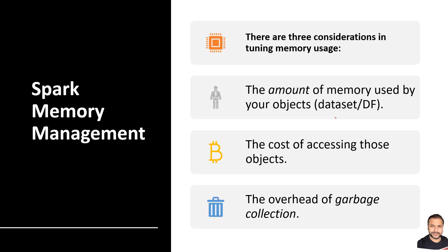There are three basic considerations when talking about memory management and tuning. First is the amount of memory used by your objects — this determines how much space would be grabbed on the JVM. If your JVM fills up very quickly it will trigger garbage collector cycles very frequently, causing performance problems. Second is the cost of accessing those objects — your objects may be heap-heavy and difficult to move over the wire for task execution.